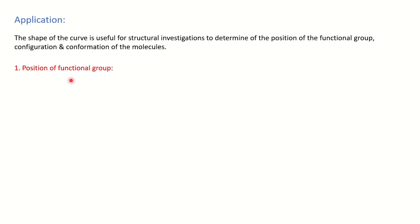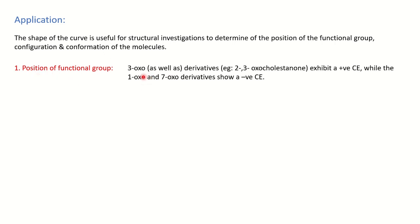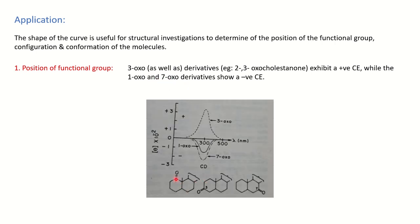First we will see an example for the position of a functional group. Consider oxo derivatives: the 2-oxo and 3-oxo cholestinone derivatives exhibit a positive Cotton Effect, while the 1-oxo and 7-oxo derivatives show a negative Cotton Effect. So if it is given that a molecule gives a positive Cotton Effect, you can eliminate the 1-oxo and 7-oxo structures and conclude it is likely the 2- or 3-oxo cholestinone. This is how you find the position of the functional group.